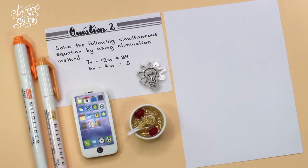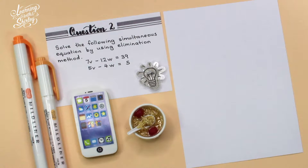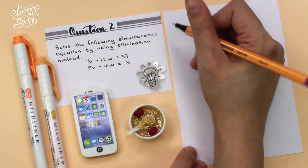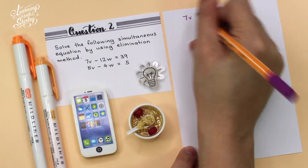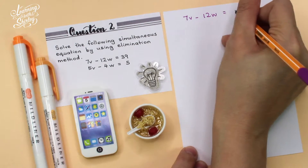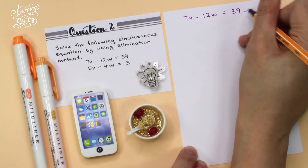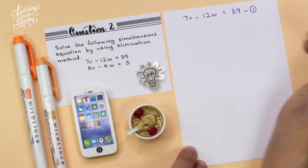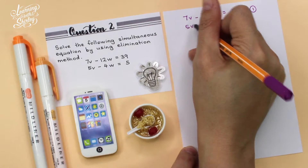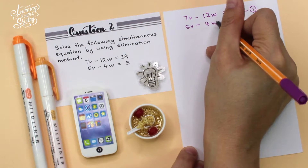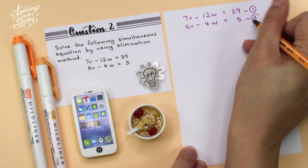For question 2, solve the following simultaneous equation by using the elimination method. Given two equations: 7v minus 12w equals 39, and 5v minus 4w equals 5. I'm going to write down the two equations — labeling 7v minus 12w equals 39 as equation 1, and 5v minus 4w equals 5 as equation 2.